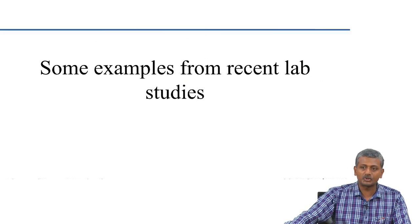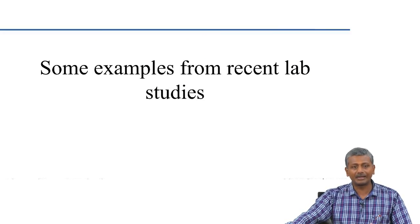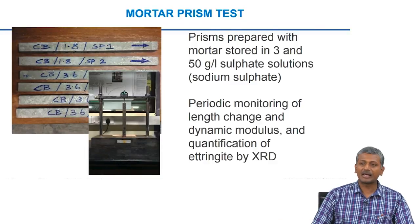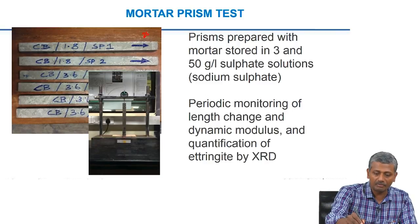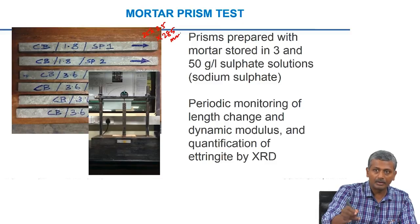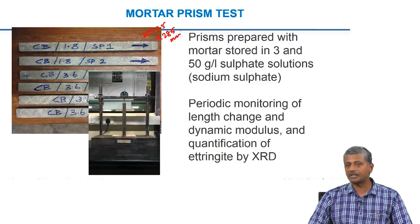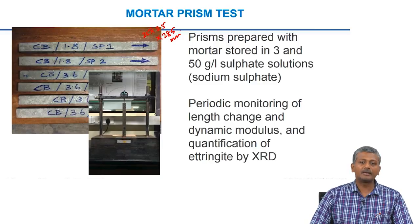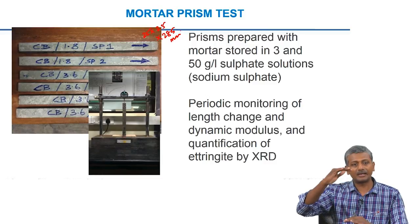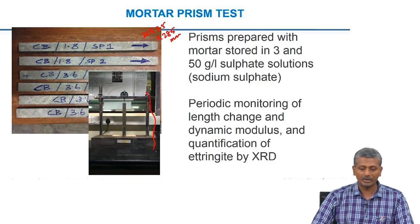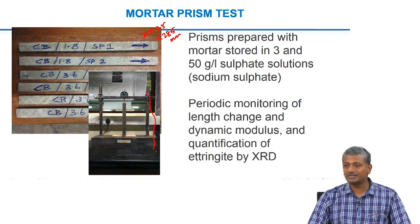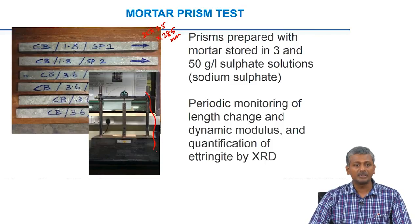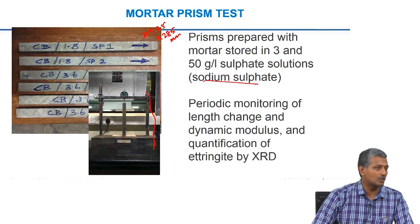Some recent lab studies show the relationship between ettringite formation and expansion. In lab studies, we typically use mortar prismatic specimens of 25 × 25 × 285 millimetres stored completely immersed inside sulphate solutions. Periodically specimens are removed and length is measured using a length comparator. Specimens were prepared with mortar stored in 3 g/L and 50 g/L sulphate solutions — in this case sodium sulphate — so no secondary mechanisms arising from the cation effect are expected.